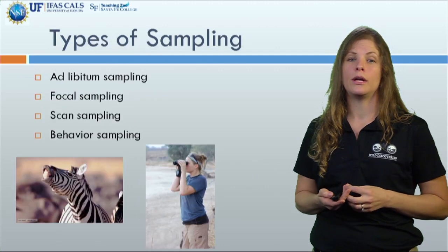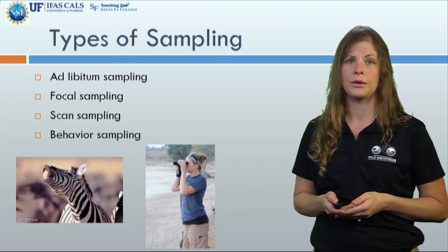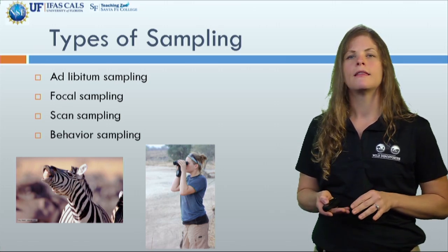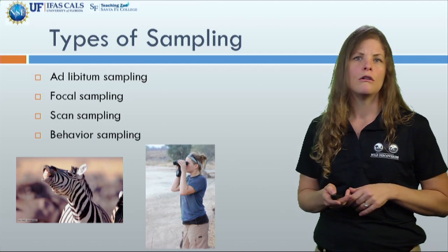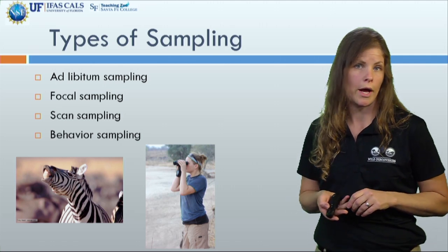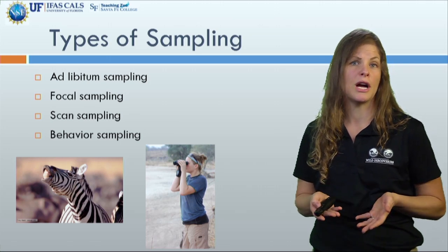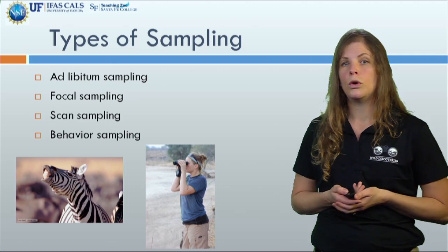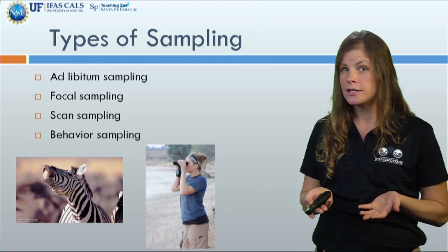Another key component of the sampling rule is determining the type of behavior sampling you will use. There are four general types. The first one is ad libitum — that's just a fancy word for recording whatever behaviors you think are important in a random, non-uniform way. I often do this when I'm first learning about a species or during preliminary observations. You've probably done this informally when watching animals at home or taking photos of zoo animals or your pets doing funny things.